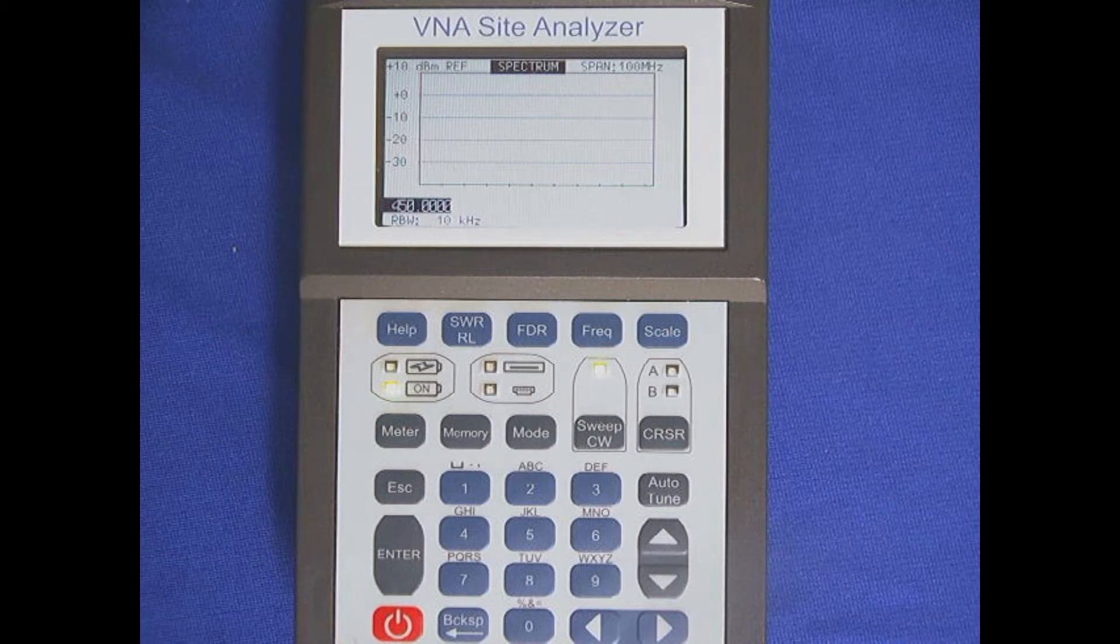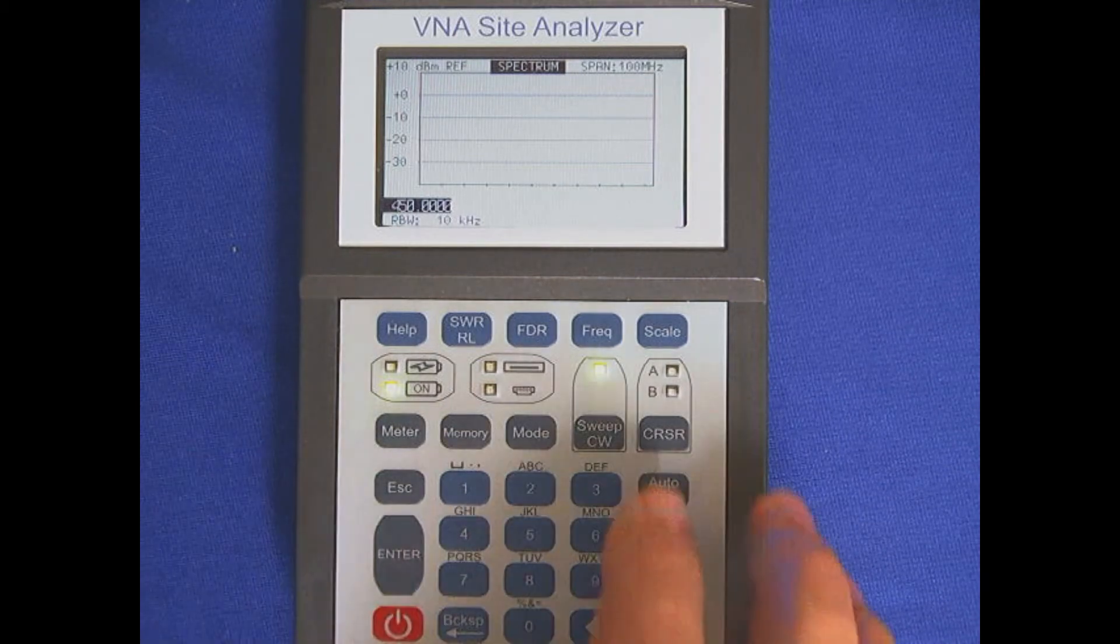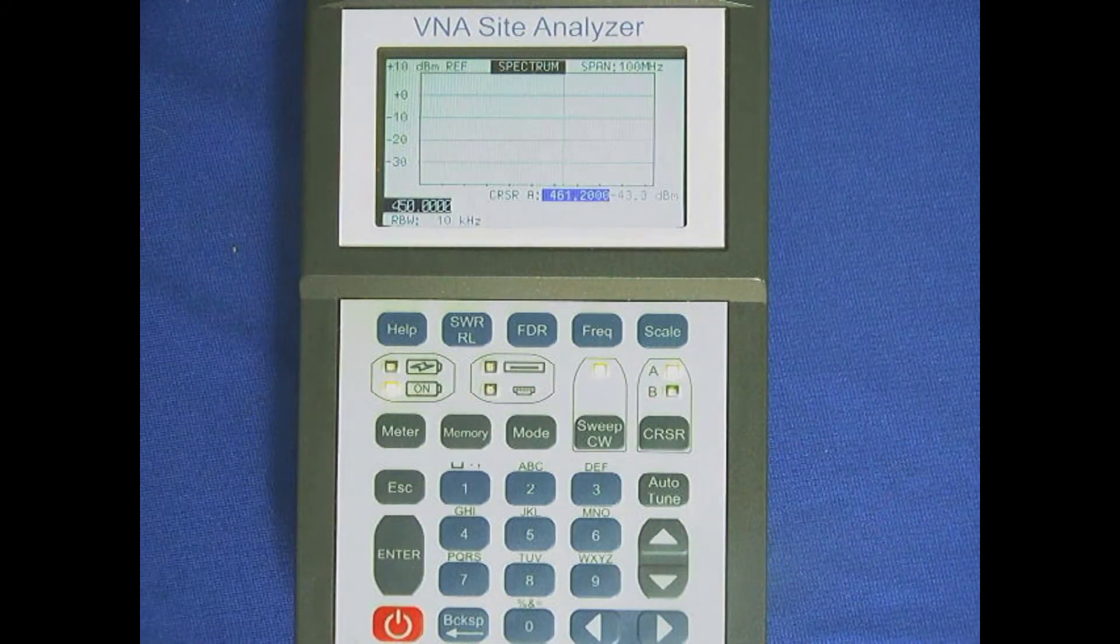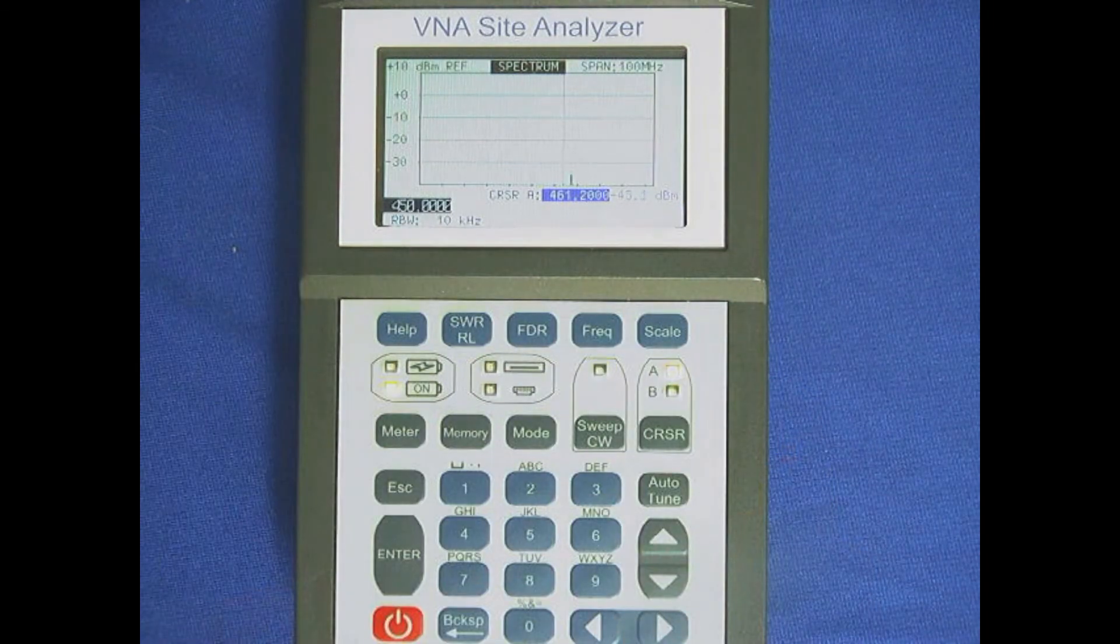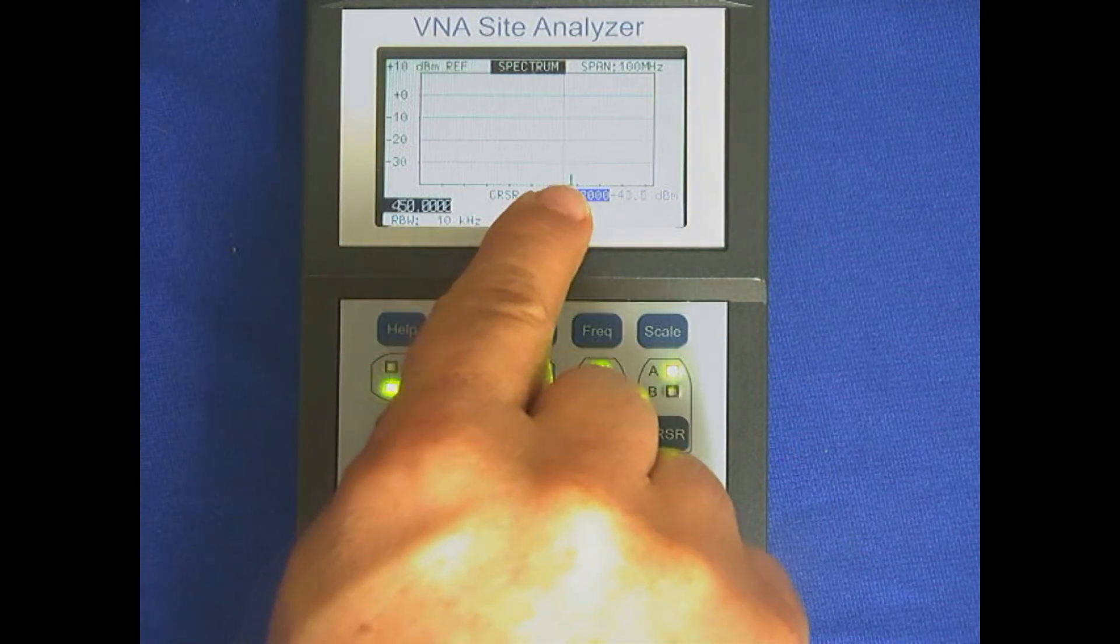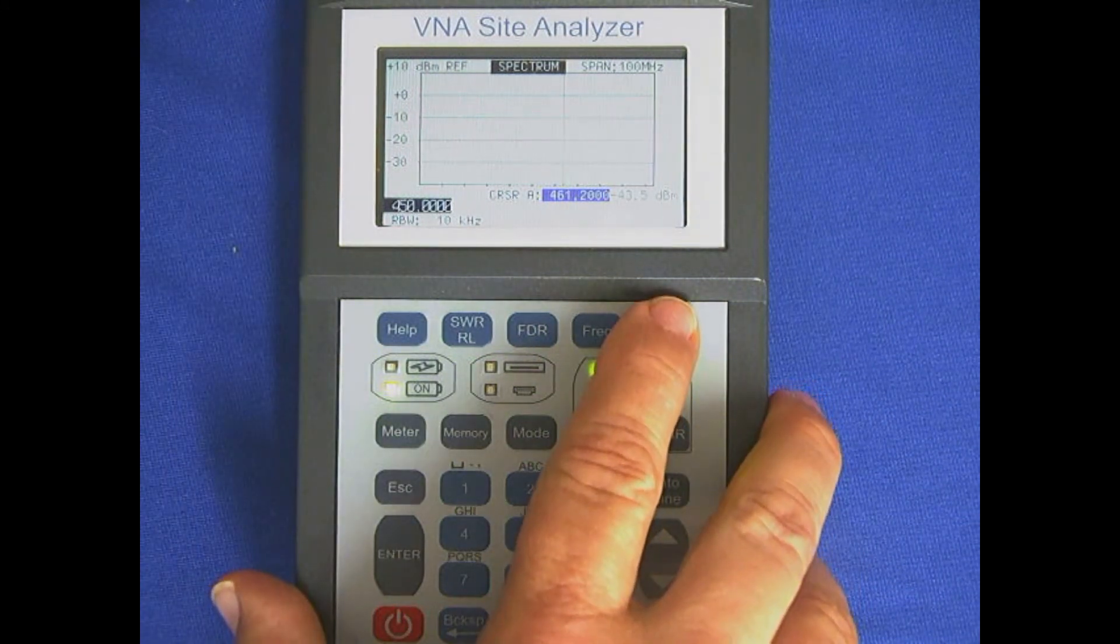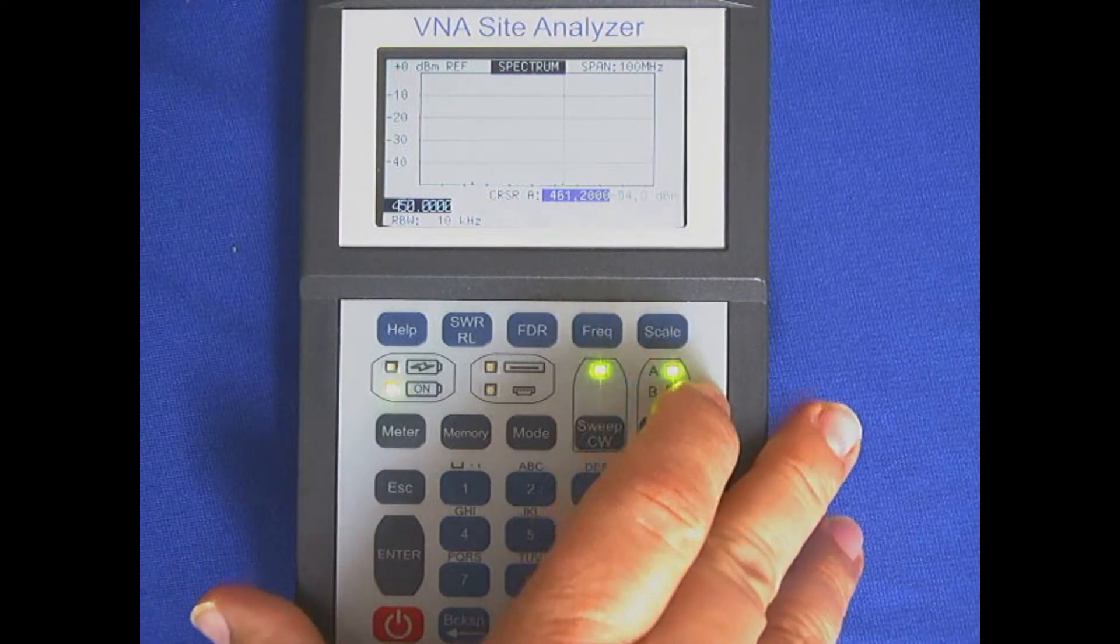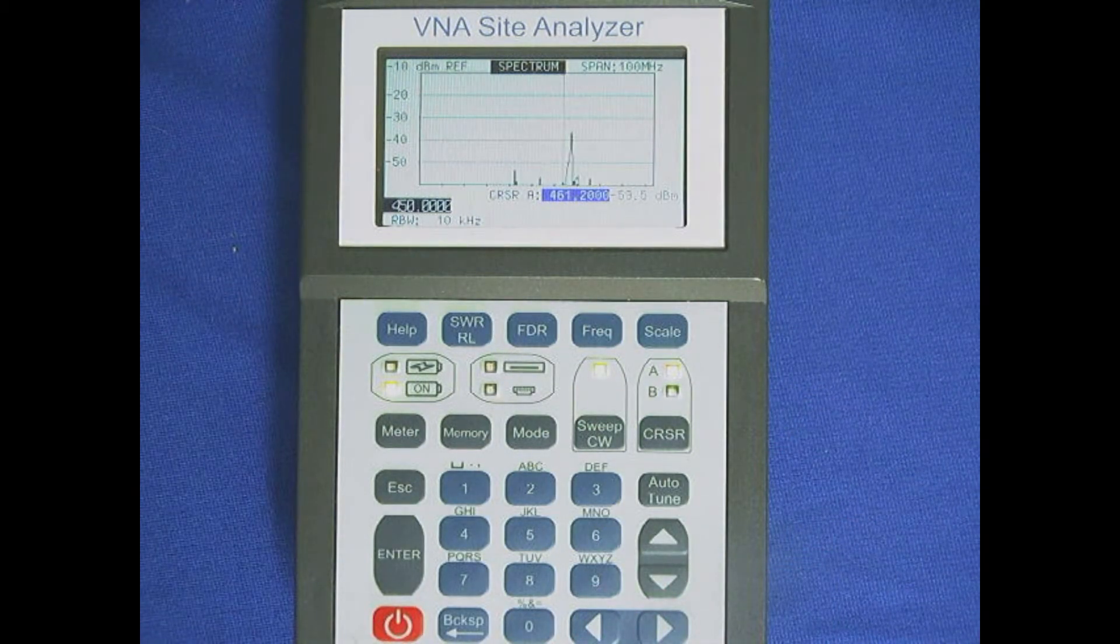So I have a UHF portable here. I'm going to turn on cursor A. I'm going to key that up. You can see the little signal right there. And that's because my scale is way up. I'm going to unkey here. You can change scales simply by touching the scale button. So we're going to go down a couple here. There we go. Now we've got a pretty good reading.